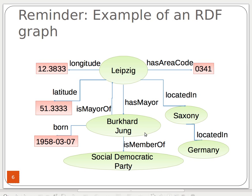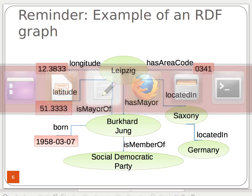For example, for a city called Leipzig, that city name is a node. The longitude is our predicate, so the subject, predicate, and object link two nodes together. You can see that subject, predicate, and object do actually look like a graph — that's what people call it.